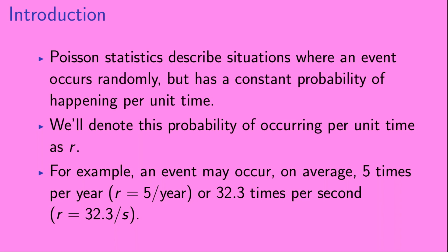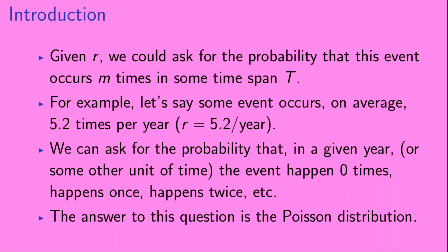For example, an event may occur on average five times per year, in which case r would be 5 divided by a year, or 32.3 times per second, so r would be 32.3 over seconds. Given r, we can ask for the probability that this event occurs m times in some time span t. For example, if some event occurs on average 5.2 times per year, so r is 5.2 over a year, we can ask for the probability that in a given year the event happens 0 times, once, twice, etc. The answer to this question is the Poisson distribution.